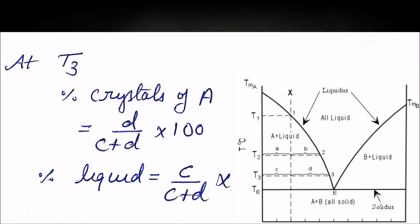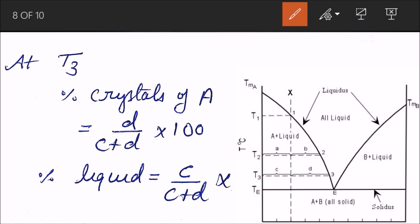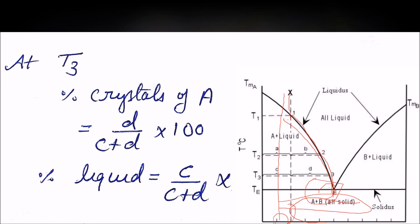Similarly at T3, you can calculate A and B using the lever rule. When the composition reaches eutectic point E, there has been no precipitation of B up to this point. As soon as it reaches E, B starts precipitating and the system remains at E until all B is precipitated, leaving only A-plus-B solid. The final bulk composition is A plus B. That is the two-component eutectic system.